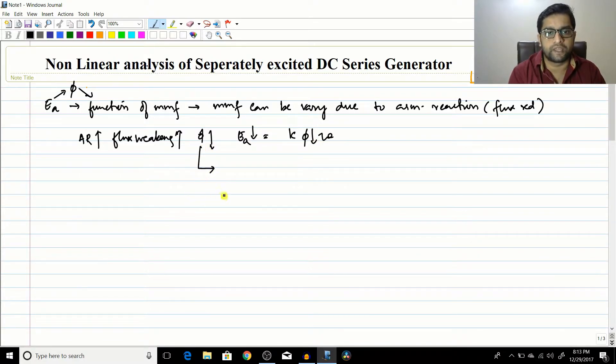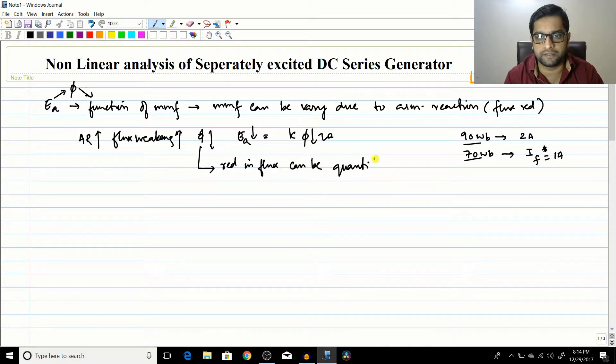Now this reduction in flux, I have told you, we can quantify it by a particular value of current. If for example, 90 Weber is represented by say 2 amperes, due to the armature reaction if it reduces to 70 Weber, these are just values with no practical significance, just to explain the thing. So corresponding to the 70 Weber, you can define another current, which is let us say IF star.